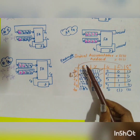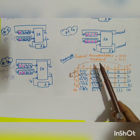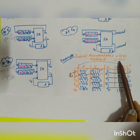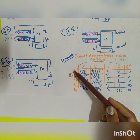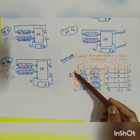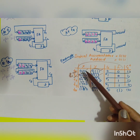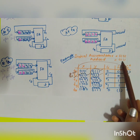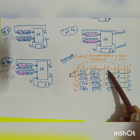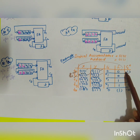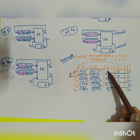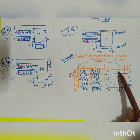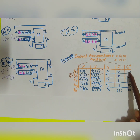Here is a numerical example of the addition. The initial accumulator content is 0101 and the addend is 0111. The table gives values at different instants of time. At T-naught, before the first shift, X contains 0101 and Y contains 0111, with the previous carry equal to zero. The sum equals X-naught plus Y-naught plus CI: one plus one plus zero equals ten in binary, so the sum is zero and the carry is one.